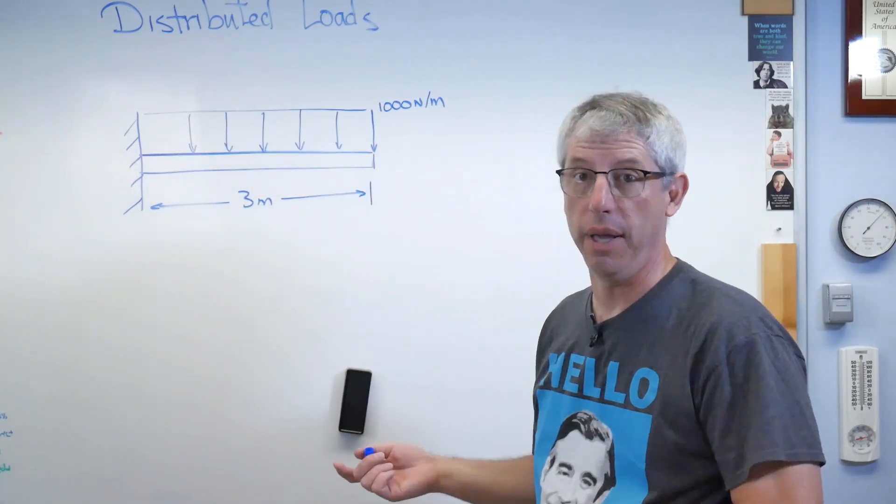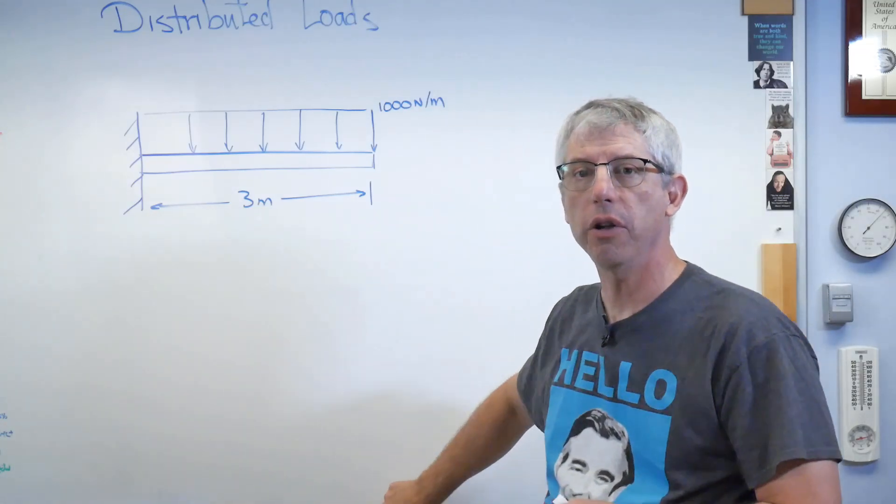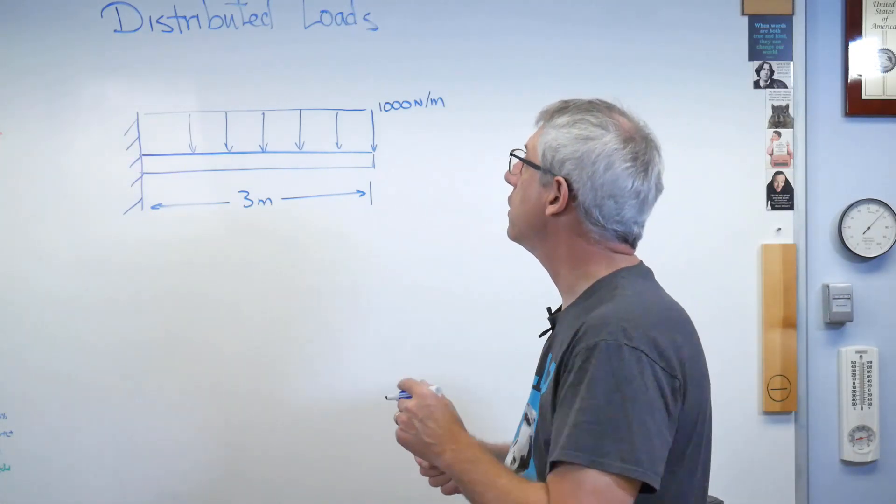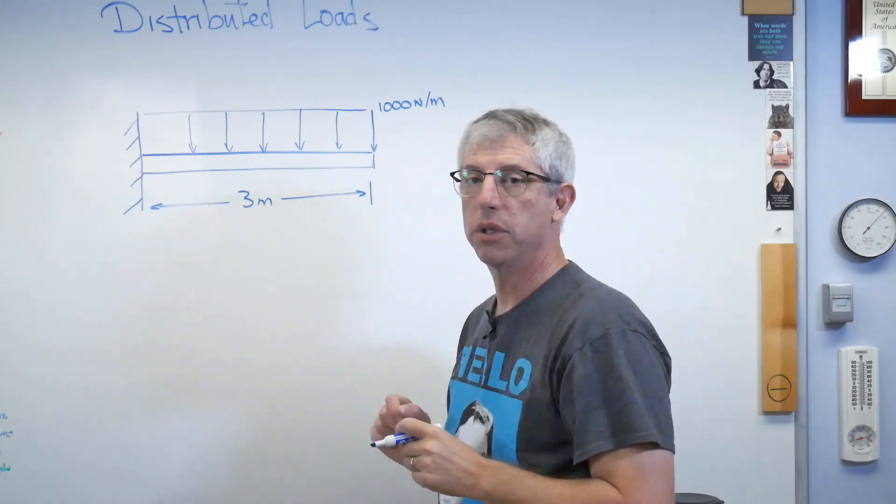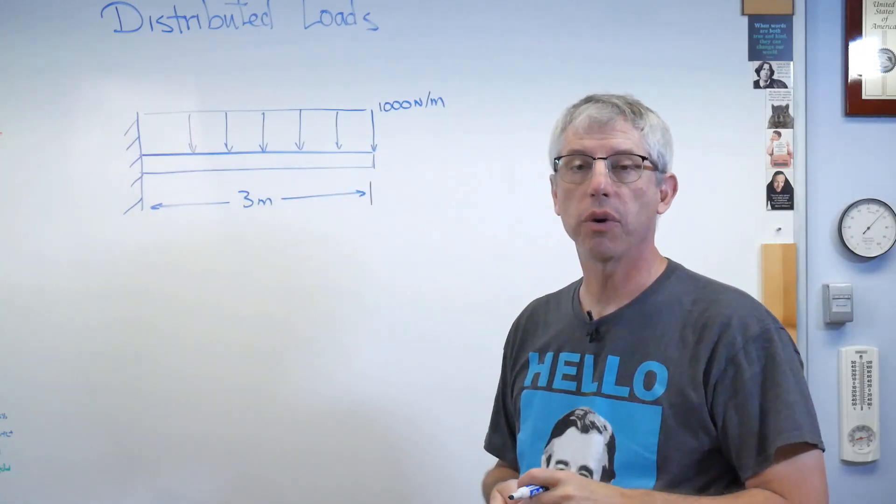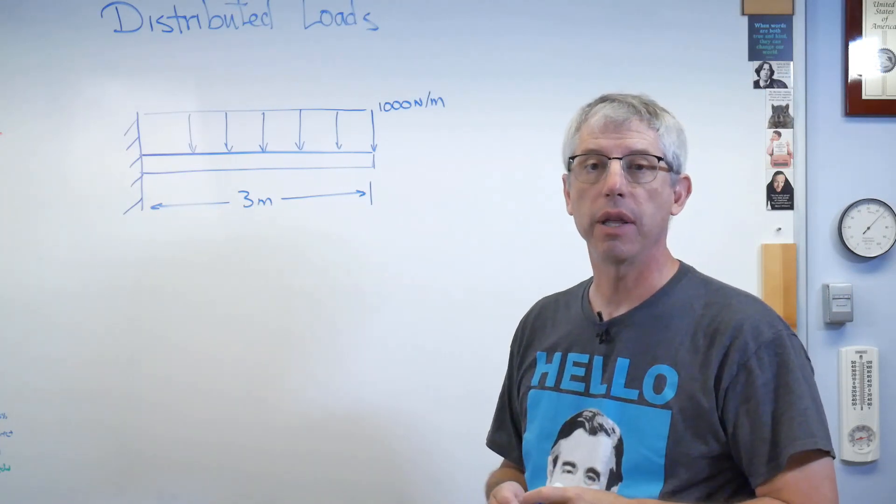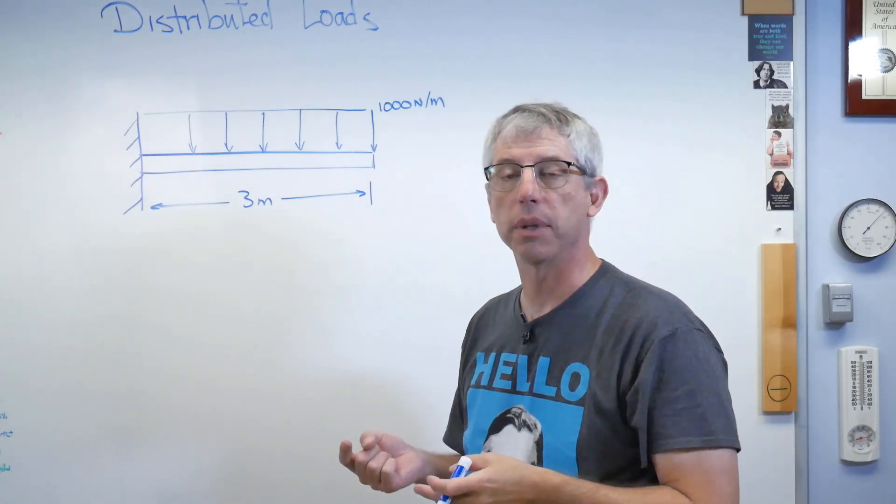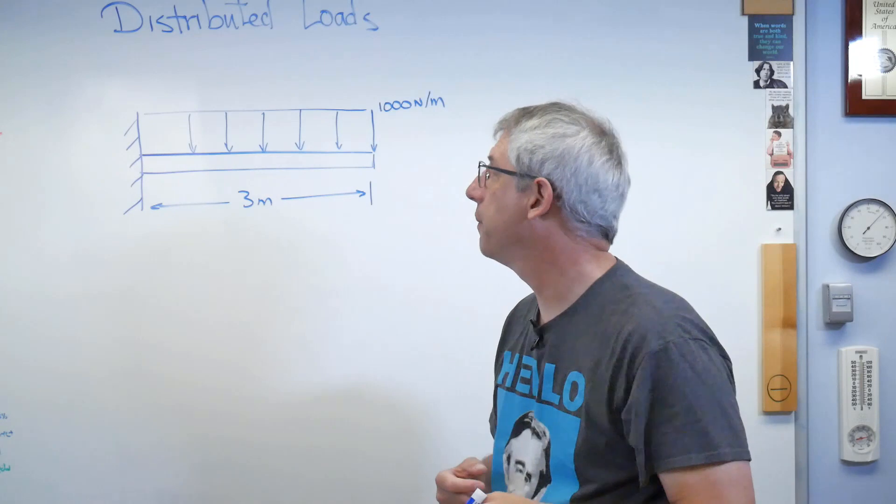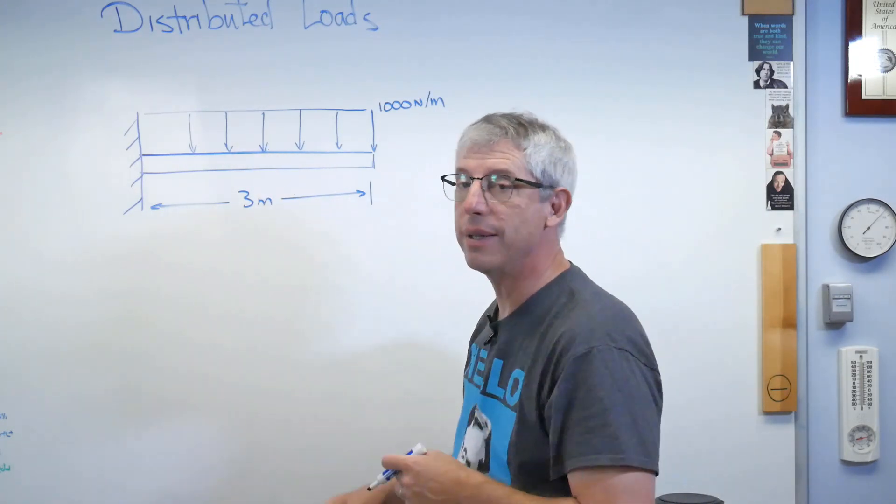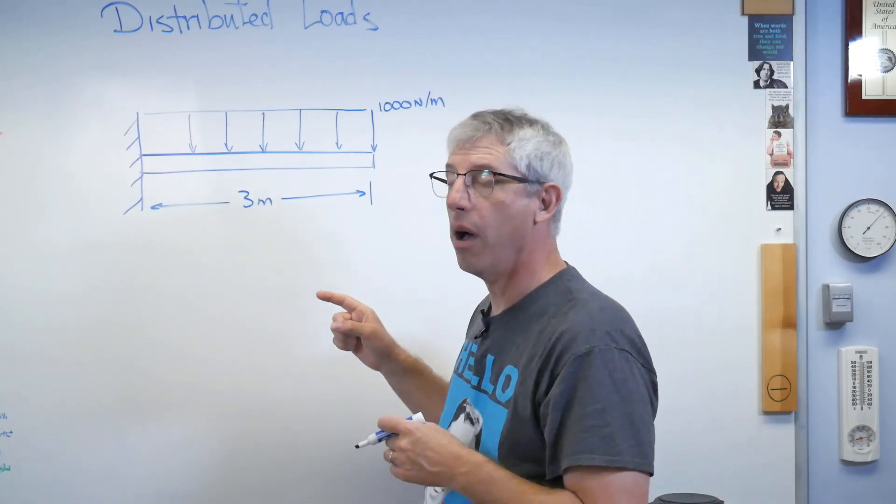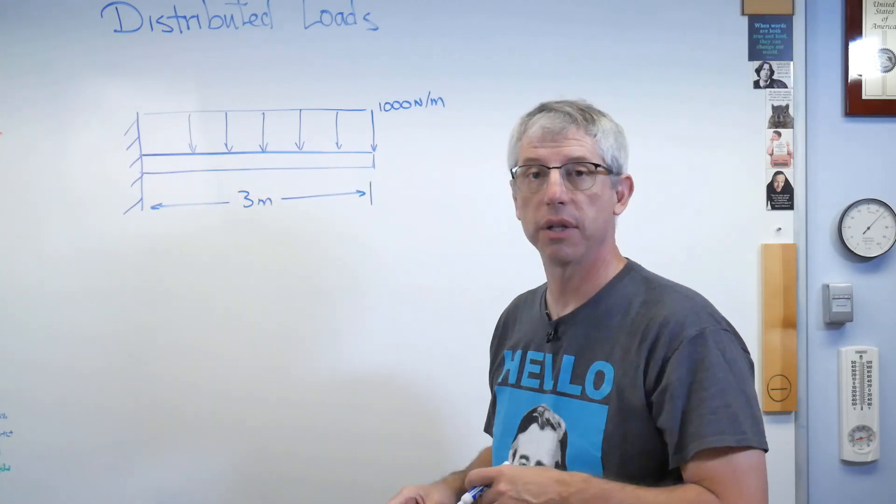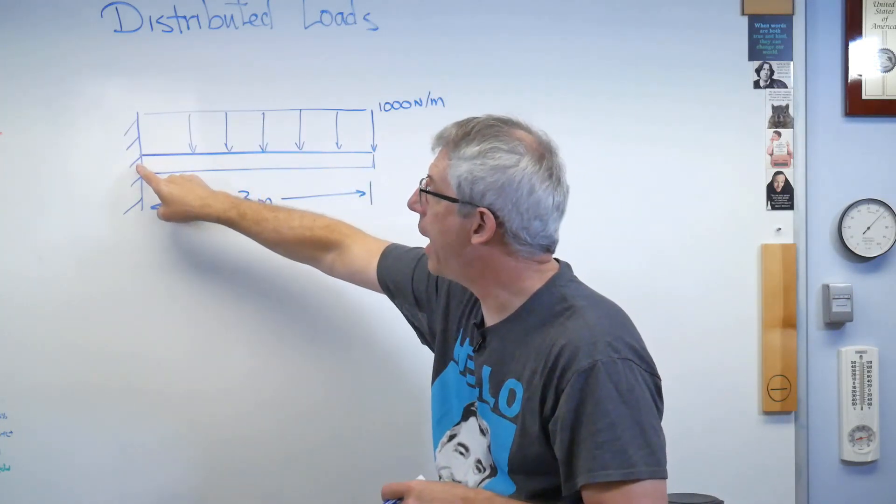So how do you deal with this? Well, it depends on what you're trying to do. If all you're trying to do is find the reaction forces and the reaction moments, the way to handle this is to concentrate the total force at what's called the centroid of this shape. The centroid is the geometric center of it. A way to think about it physically, if I cut this shape out of a uniform piece of material, like a piece of plywood or something, the centroid is where that shape would balance. Well, for a rectangle, it's pretty easy. The centroid is in the middle.